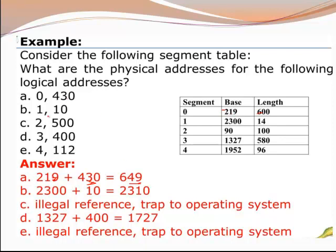In the second question, the logical address is (1, 10). First, we check the limit of segment number 1 — the limit is 43. Since 10 is less than 43, this is a valid offset. To get the physical address, add the offset to the base address of segment number 1: 2300 plus 10 gives physical address 2310.